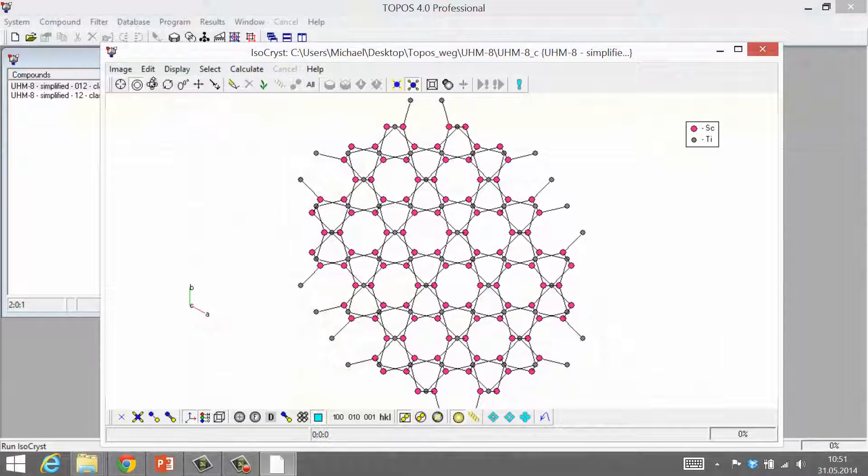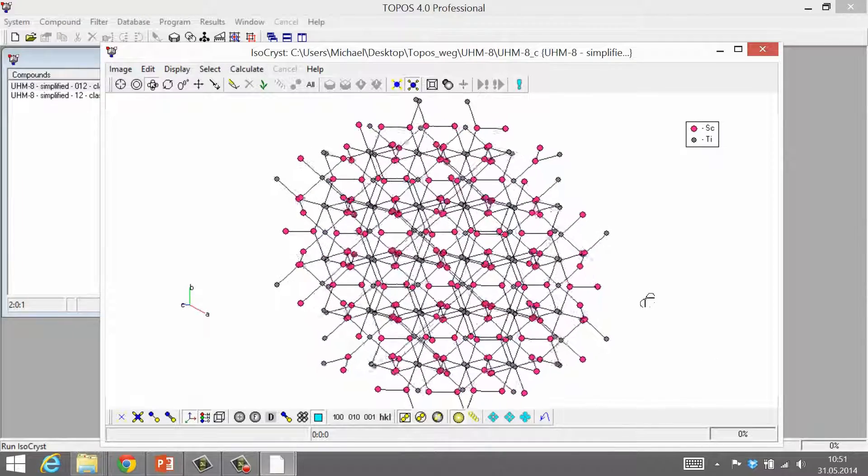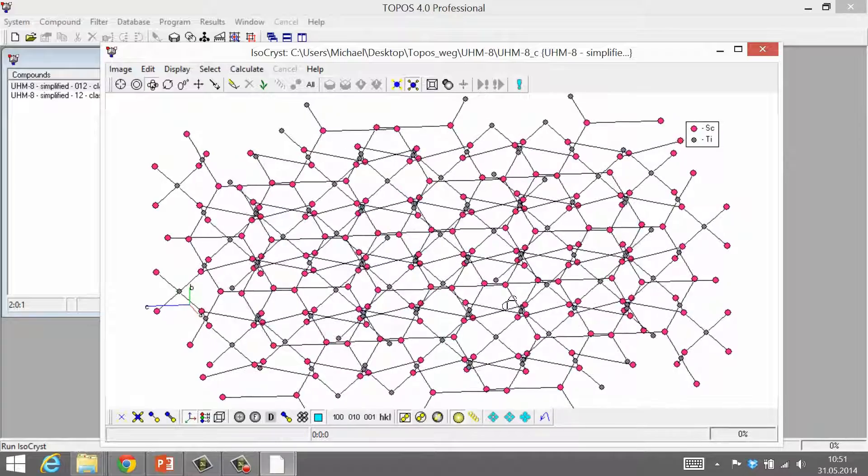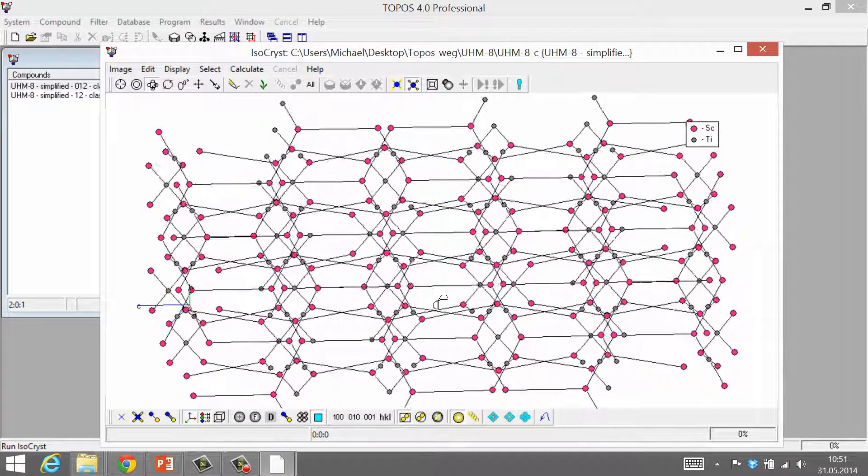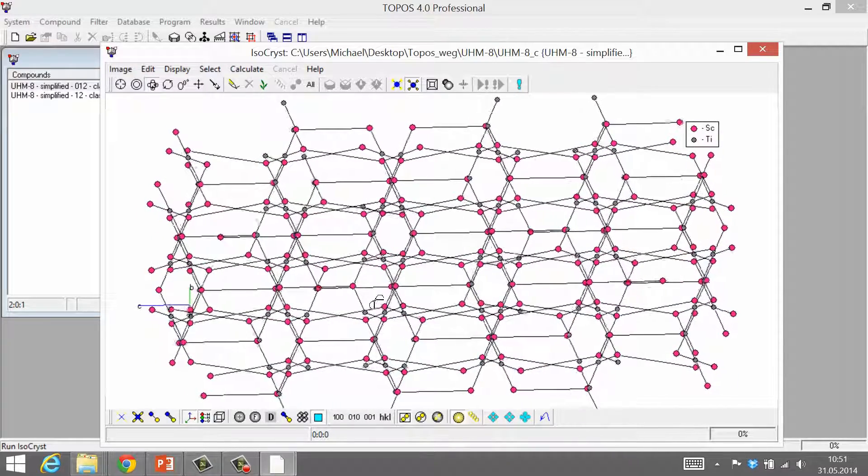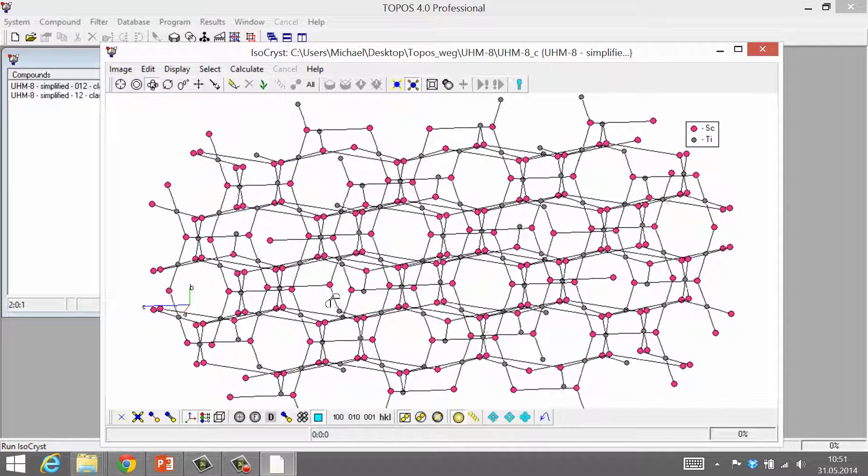Okay, now we have been introduced to the basic principles of network topology. Next week, we will use a computer program called Topos, which is very useful to classify even very complicated networks semi-automatically.